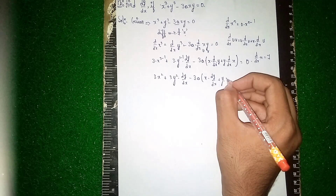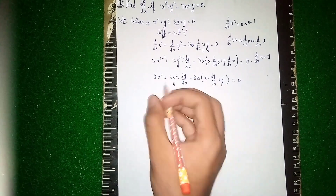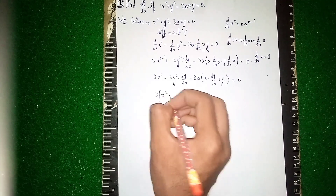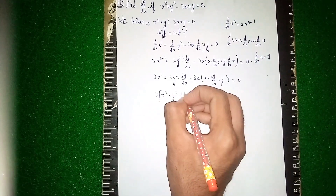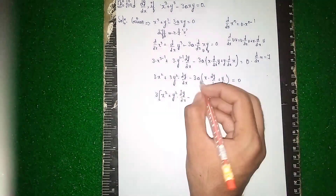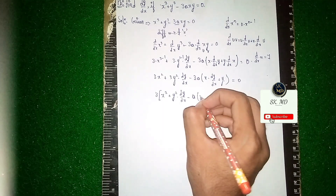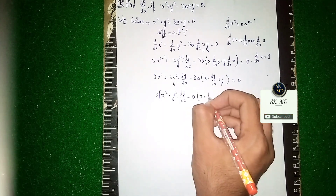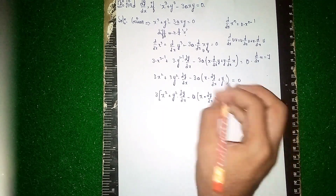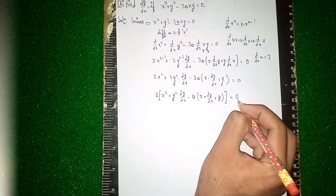So y into 1 is y only. Closing the bracket, I'm taking 3 as common, then taking 3a as common: x² + y² · dy/dx - 3a(x · dy/dx + y) = 0. Dividing both sides by 3, so 3 gets eliminated.